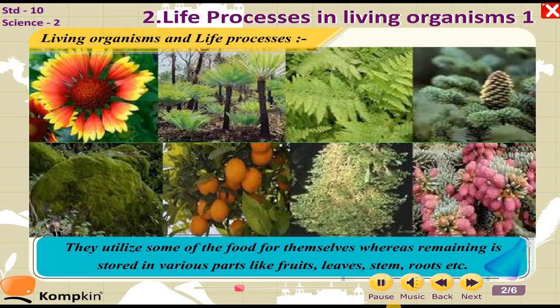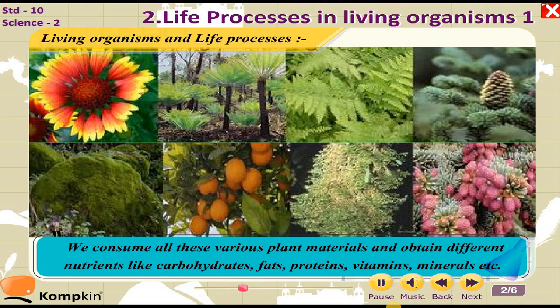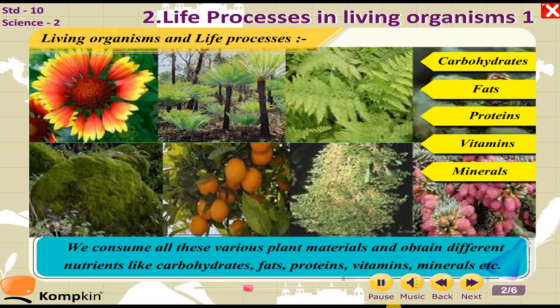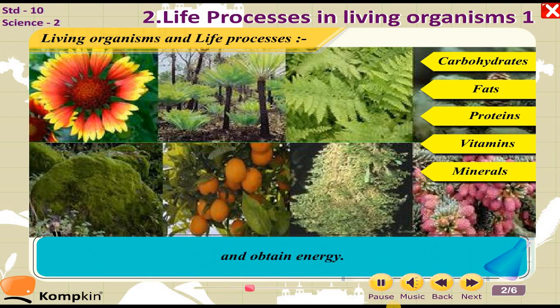The remaining food is stored in various parts of the plant like fruits, leaves, stem, roots, etc. We consume all these various plant materials and obtain different nutrients like carbohydrates, fats, proteins, vitamins, minerals, etc., and obtain energy.